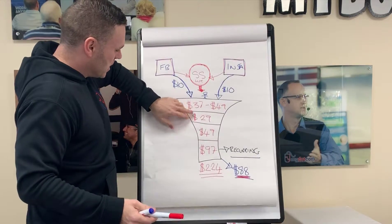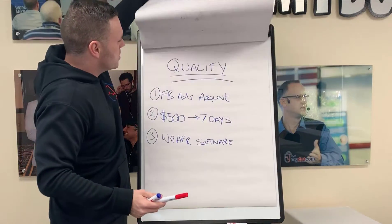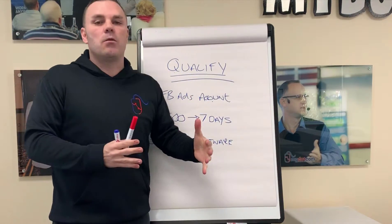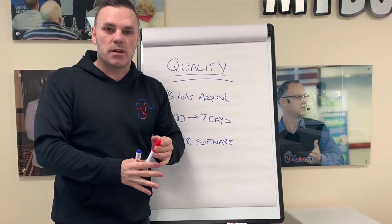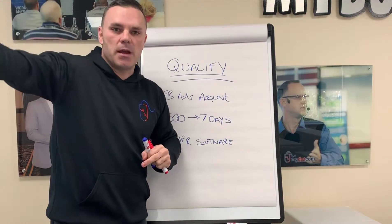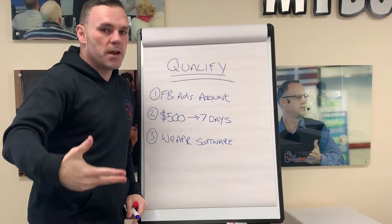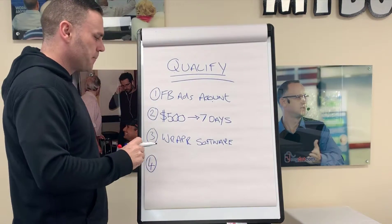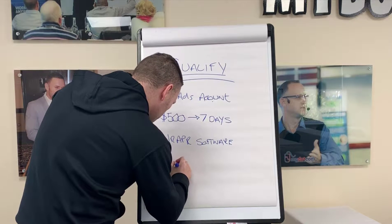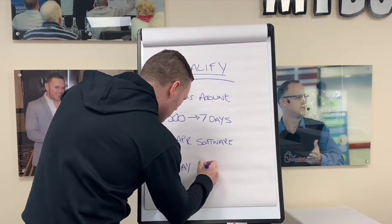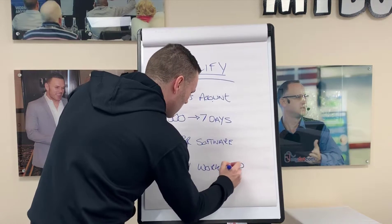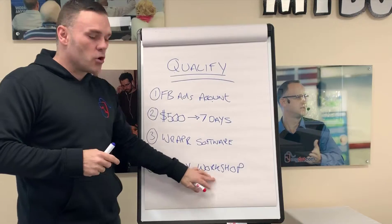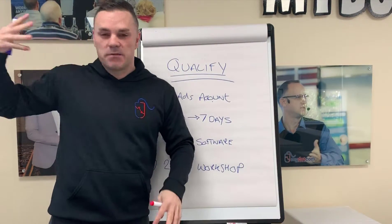We'll send you a link to get the Wrapper software — it's very cheap. The whole sales funnel is two hundred and twenty-four dollars if you get everything. You must have the software because once I've given you all the Facebook ads, the Instagram ads, and shown you exactly how this works with copy-and-paste everything over to your account, you need to be able to continue making money. You need the software to create the Facebook and Instagram ads, which I'm going to teach you. And number four — the last in the qualification process — you must be able to attend my two-day workshop. It's totally free of charge.